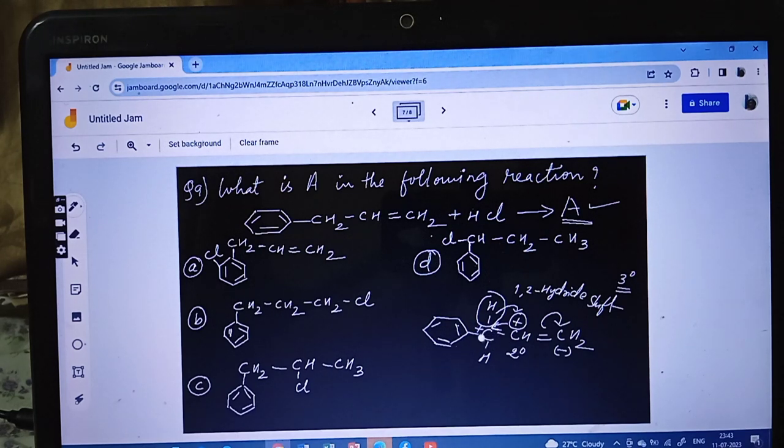Now if we see the degree of this carbon, it becomes 3 degree. So as a result, now what will happen - here since plus charge has come and we are reacting it with HCl, H+ Cl-, Cl will join here. Cl will join to this carbon.